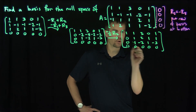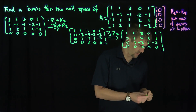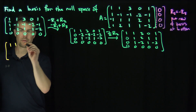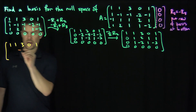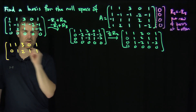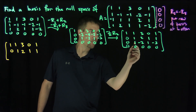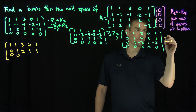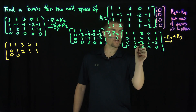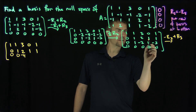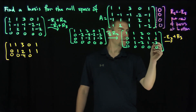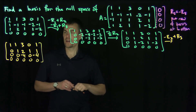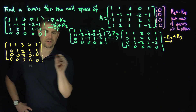Now I'm in a good position to do negative row two plus row three. Negative row two plus row three gives us: 1, 1, 3, 0, 1; then 0, 1, 2, 1, 1; then negative 1 plus 1 is 0, so that's 0, 0, negative 4, 0, negative 4; then zeros.